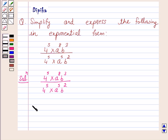Now this can be written as 4 raised to power 5 into a raised to power 8 into b cube over 4 raised to power 5 into a raised to power 5 into b square.